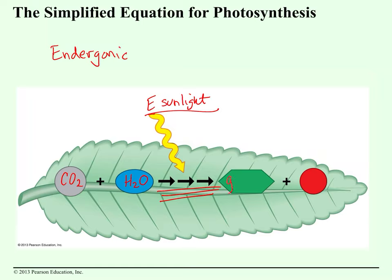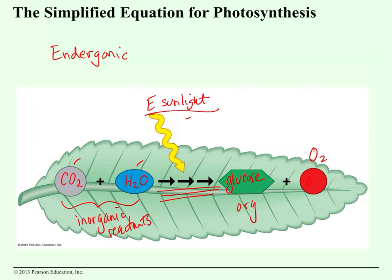The products of photosynthesis are glucose and oxygen — oxygen is the waste product. We're looking at how a plant converts carbon dioxide and water, using solar energy, into a sugar molecule — an organic molecule. The reactants are inorganic, and we are producing an organic product. That's why organisms that can photosynthesize are called autotrophs or producers — they produce an organic product that other organisms which cannot photosynthesize can eat.